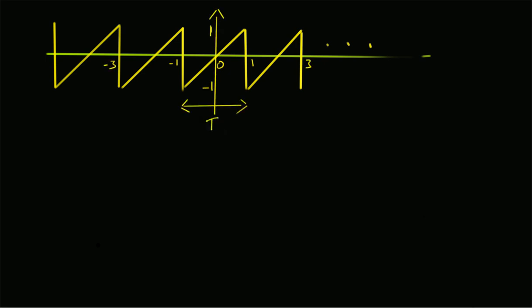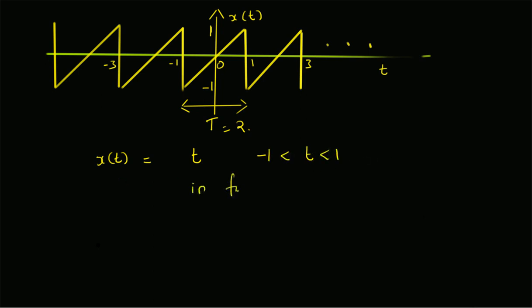Given this sawtooth waveform that has a period T equal to 2, we want to find the Fourier series expansion. The time axis is t and the signal is x of t. x of t is a sawtooth waveform, meaning in the fundamental period it has a function t and the values change from minus 1 to plus 1. So the interval is from minus 1 to plus 1. The definition of the signal: x of t is equal to t in the interval minus 1 to plus 1. By definition, the same structure repeats in all other intervals. Note that the fundamental period is equal to 2.